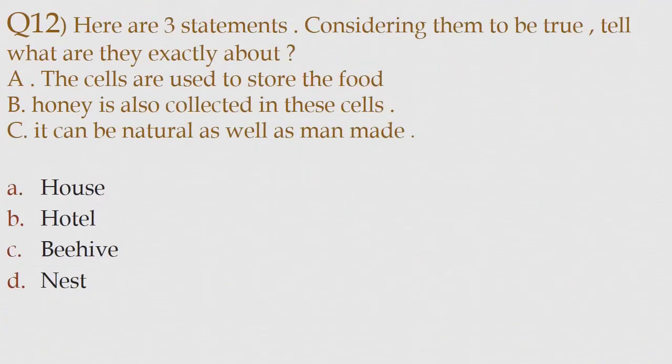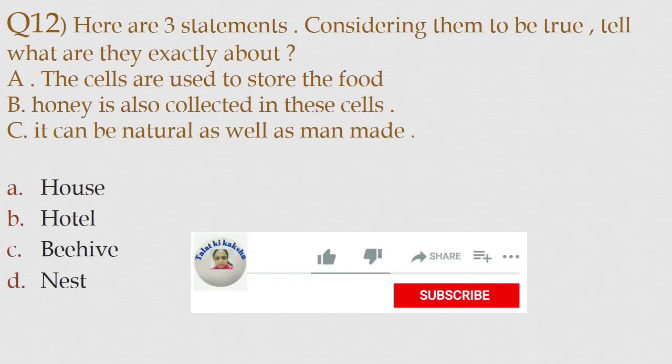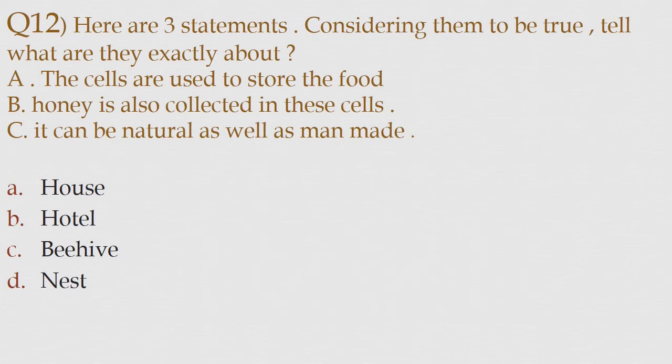Question 12: Here are three statements. Consider them to be true. Tell what are they exactly about. A: the cells are used to store the food. B: honey is also collected in these cells. C: it can be natural as well as man-made. Option A house, option B hotel, option C beehive, option D nest. The correct answer is option C beehive.